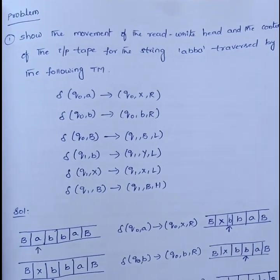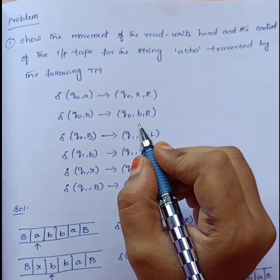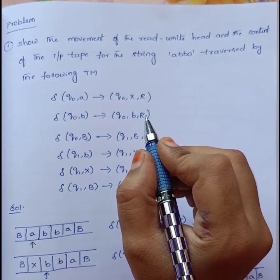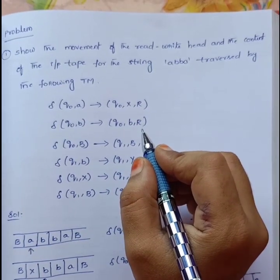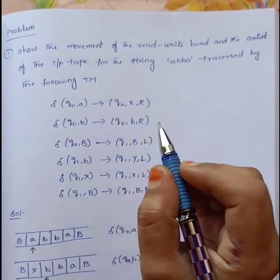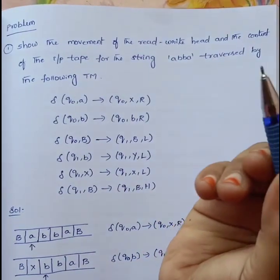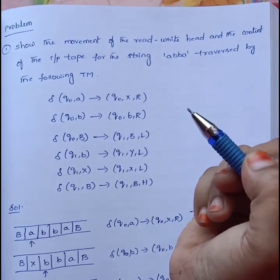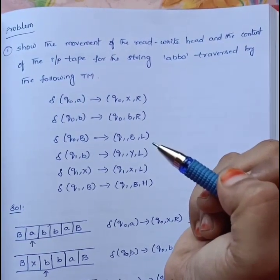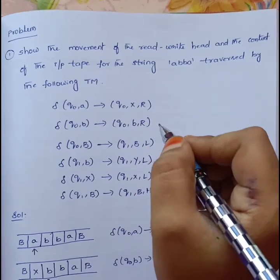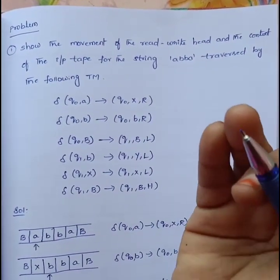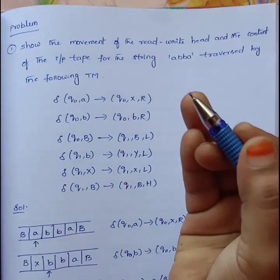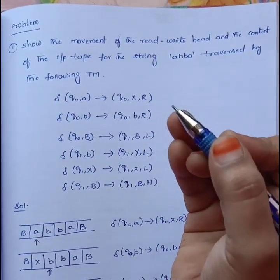Hi viewers. In the last class I discussed some topics relevant to Turing machines: formal definition, mechanical diagram, and instantaneous description. In the mechanical diagram we have an input tape, a read/write head, and a finite controller. In this class I am going to explain a problem showing how the read/write head moves and how we traverse the string.